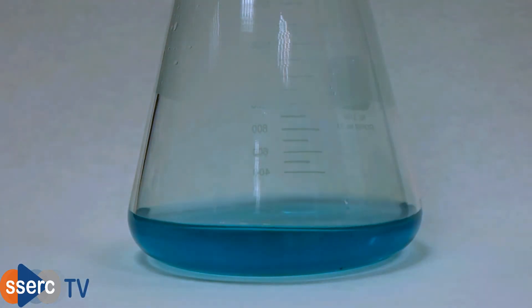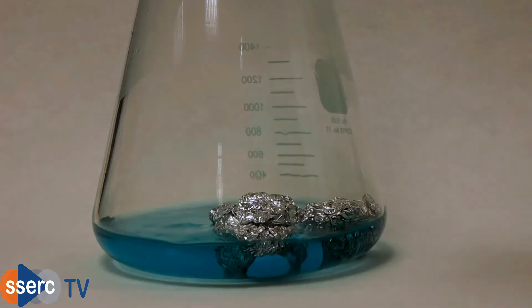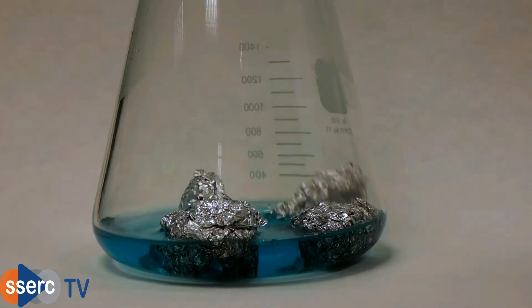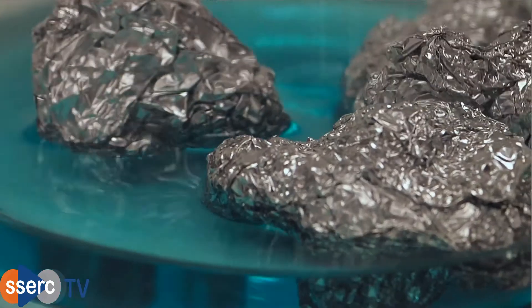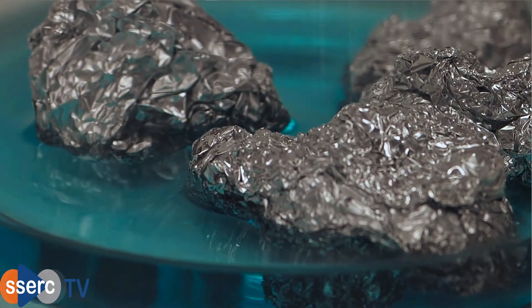Once dissolved we add a few balls of aluminium foil. Within a few seconds you see some bubbles appearing and steam and soon after that you'll notice the appearance of reddish brown metallic copper.